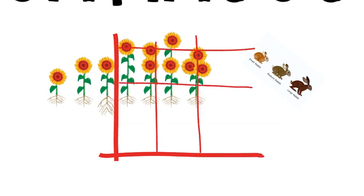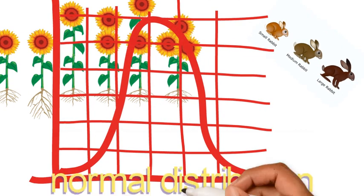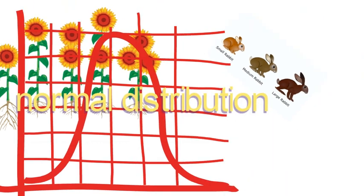Now this variation can be represented by a line graph showing a normal distribution curve, and this normal distribution curve is usually for continuous variation.